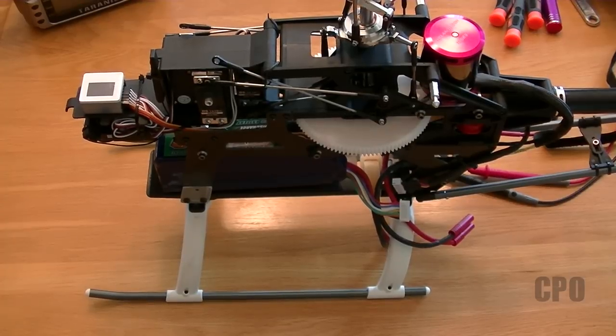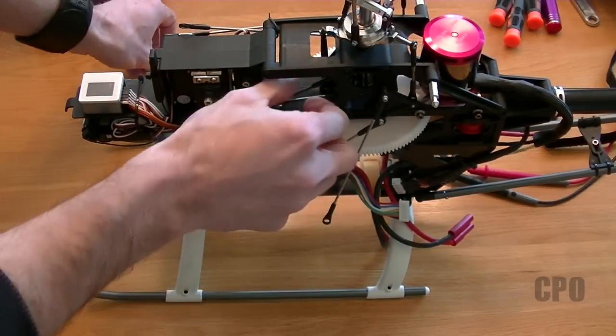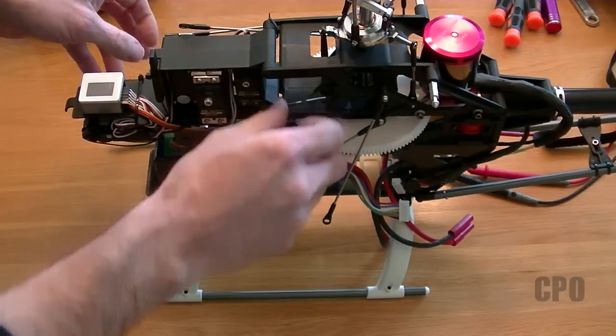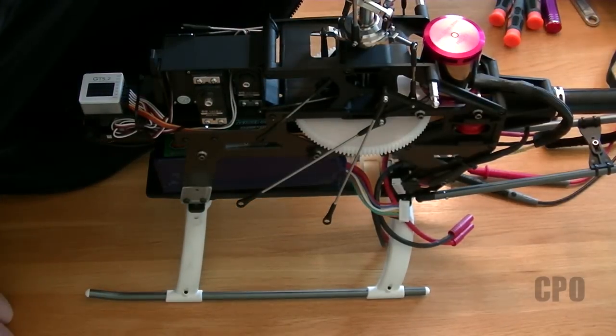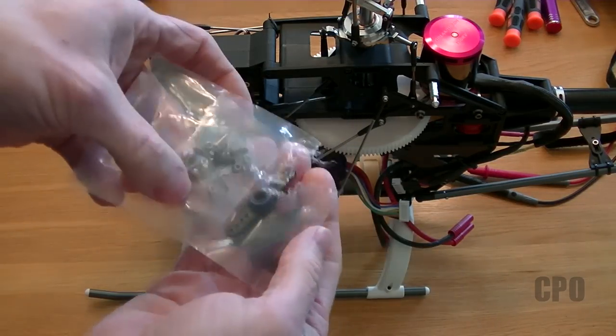The first thing we're going to need to do is get our servos connected to our bell cranks through the linkages. For that we're also going to need to put our servo horns on. I'm just going to do the cyclics this video and I'll do the tail servo and setup in a separate video.